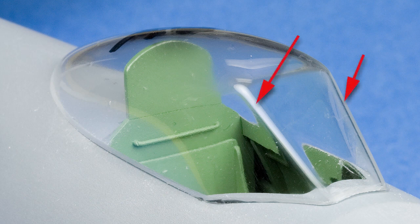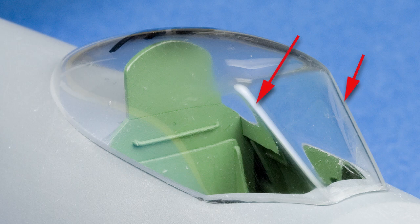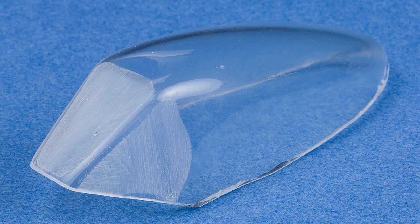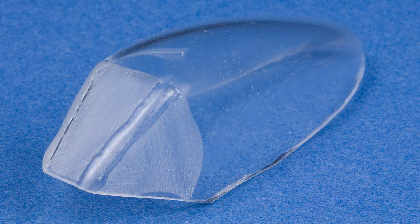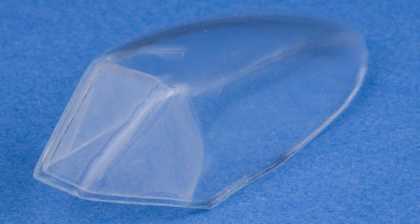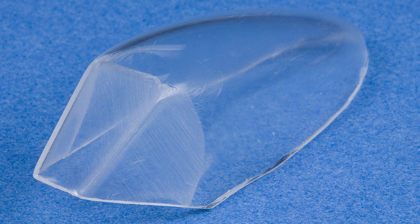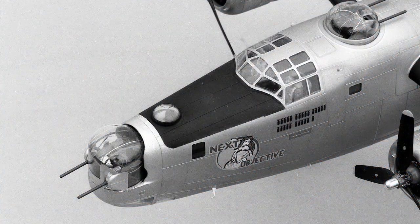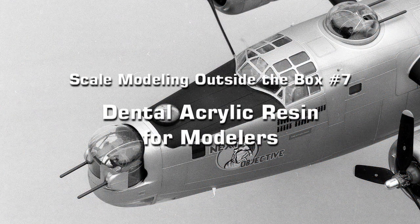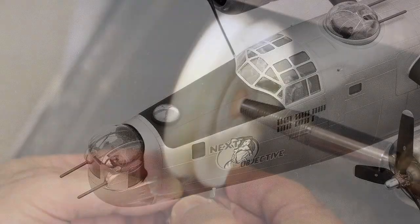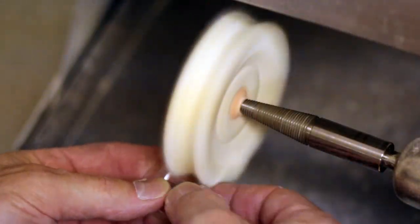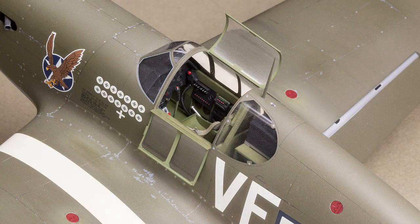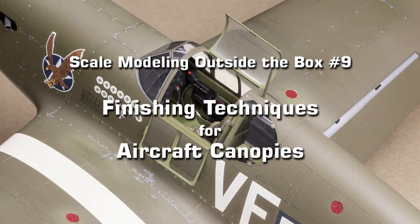One element to note is that very sharp corners are impossible to achieve when forming over a form. In the case of this 1/32nd scale Tempest, I used a mixture of clear acrylic powder and cyanoacrylate cement to build up the deficiency. A description of this process is shown in the video on dental acrylic resin. The canopy was polished out using the process described in the video on aircraft canopy finishing techniques.